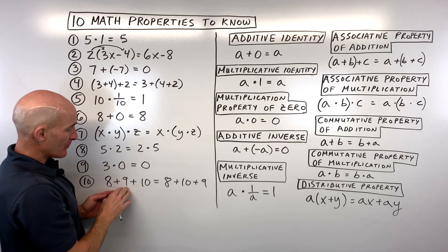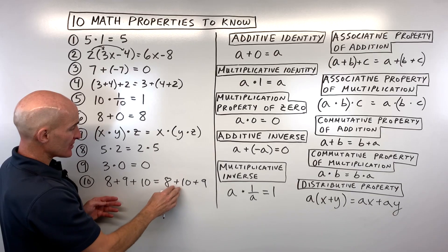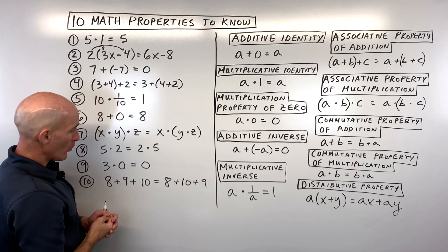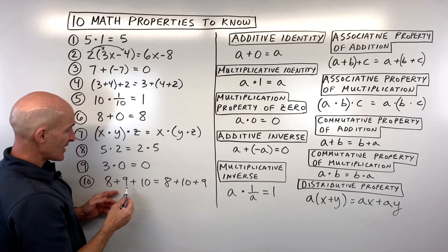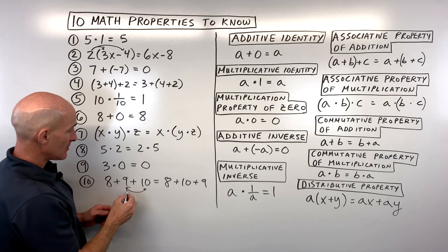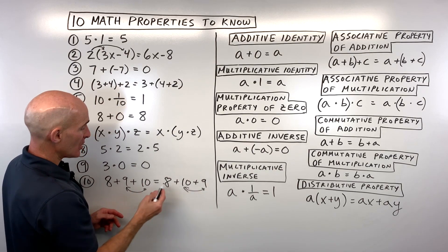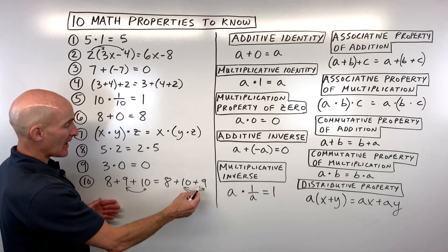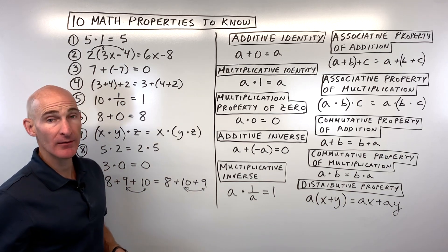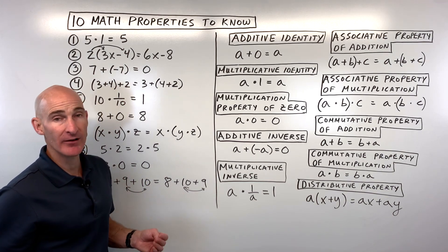Number ten: 8 + 9 + 10 equals 8 + 10 + 9. Nine and ten swapped positions — that's a change in order. You get the same answer, but we changed the order, so that's called the commutative property of addition.